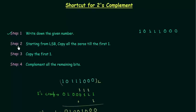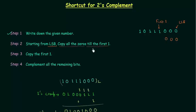In step number 2 we have to start from LSB — least significant bit — and copy all the 0's till the first 1. This is the LSB and this one is the first 1 from LSB. We have to copy all the 0's; there are 3 zeros, so I will copy them down. In step number 3 we have to copy the first 1 also, so I will copy this 1.